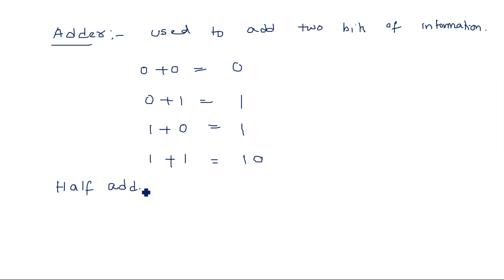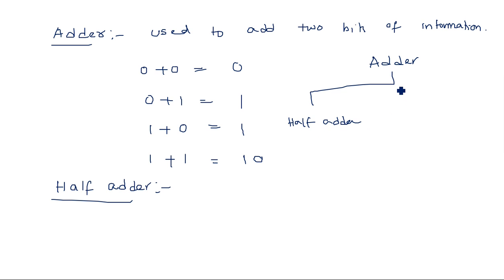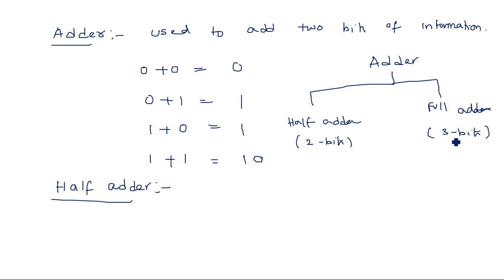There are two types of adders: half adder and full adder. A half adder is used to add two bits of information, whereas a full adder is used to add three bits of information. A half adder can add only two bits; it cannot add more than that. If you want to add three bits, you should use a full adder.